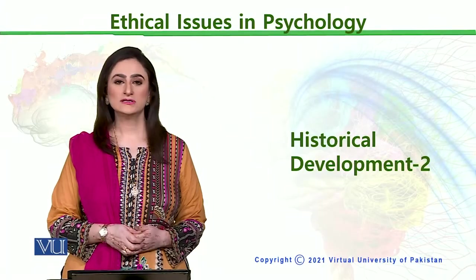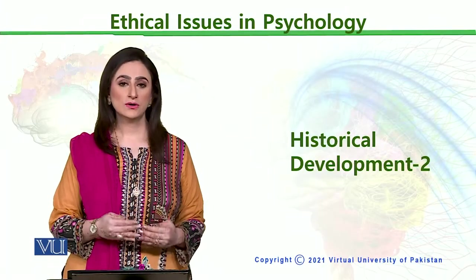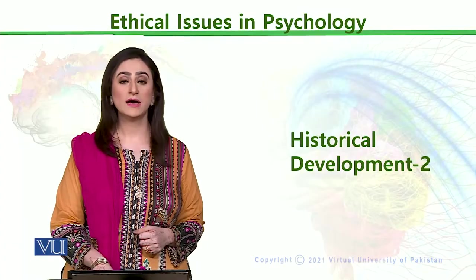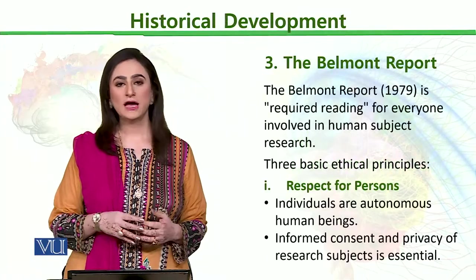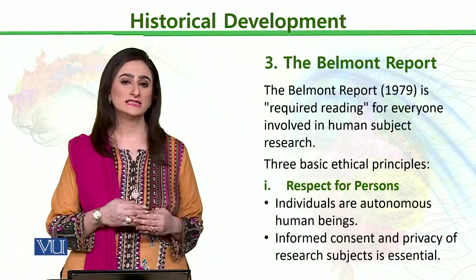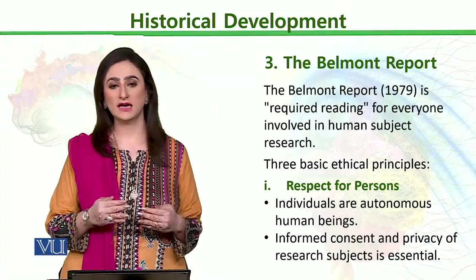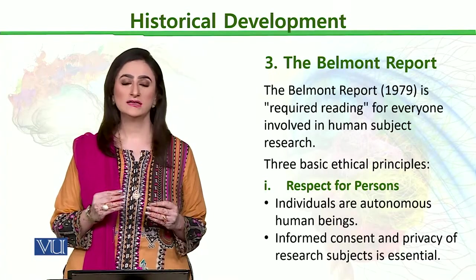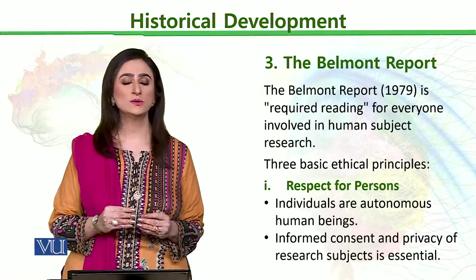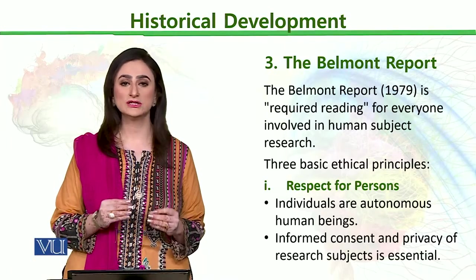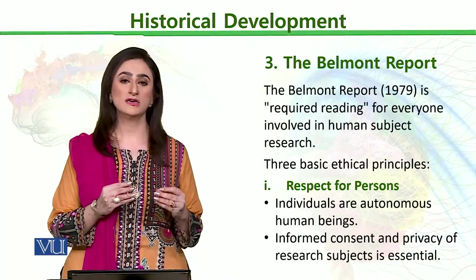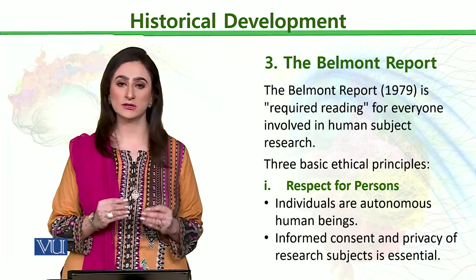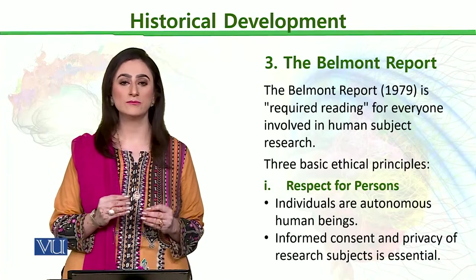Another important code of ethics in historical development is the Belmont Report. The Belmont Report was prepared in 1979 and is required reading for everyone. Anyone who is interested in doing research on human and behavioral research should read the Belmont Report.